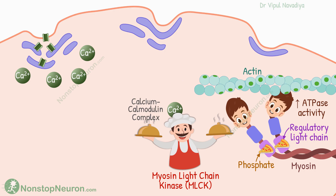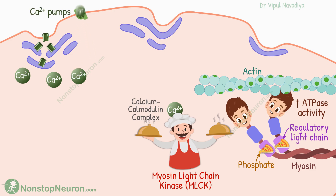This produces muscle contraction. This is how excitation leads to muscle contraction in smooth muscles. Now let's talk about how this process is terminated to cause relaxation. First, the closure of calcium channels prevents further entry of calcium into the cell. Also, calcium pumps on the cell membrane pump calcium out of the cell, and pumps on the sarcoplasmic reticulum pump calcium back into the reticulum.